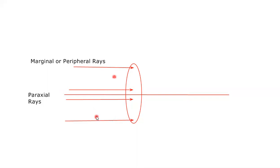So, not only this, the one at the bottom here is also a marginal or peripheral ray. Periphery or margin means a boundary. So, these are peripheral or marginal rays, and these are paraxial rays.